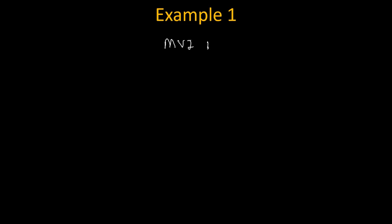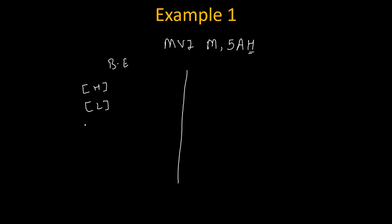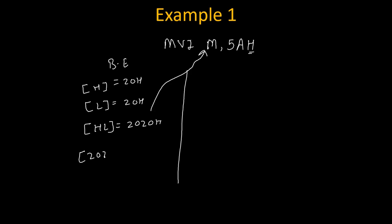Let's take an example. Suppose the instruction is MBI M, FAH. This FAH is hexadecimal data. Before execution, we need to check the value of H and L registers. Let's say the value of H is 20H and L is also 20H, so HL will be 2020H. This 2020H is treated as a memory address. On this 2020H memory address, let's say the data is 33H.